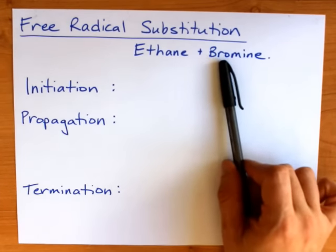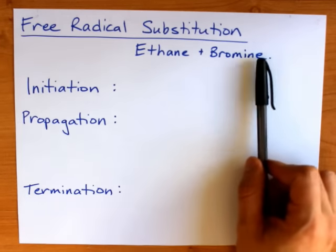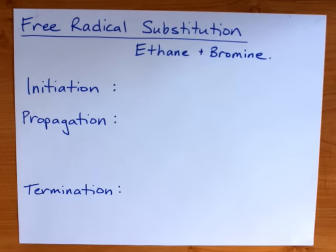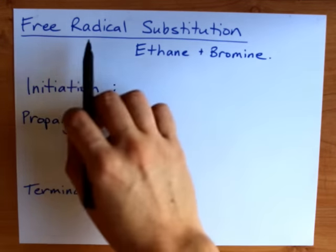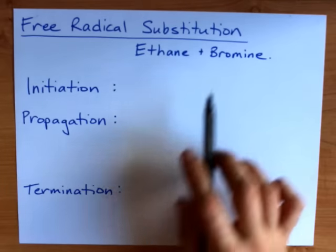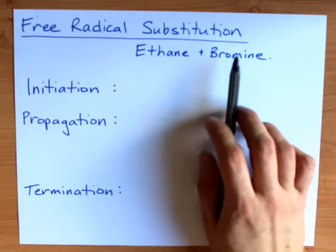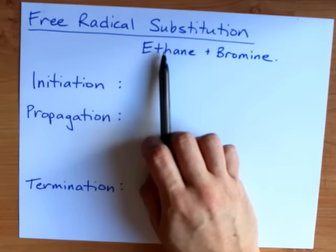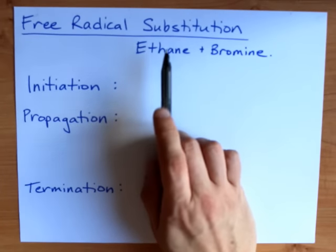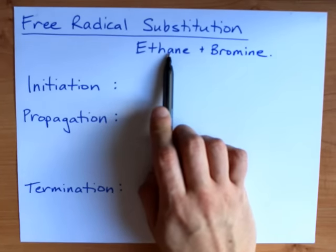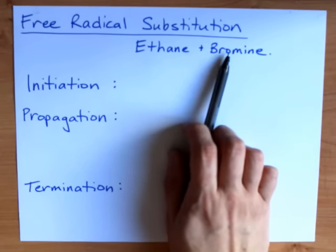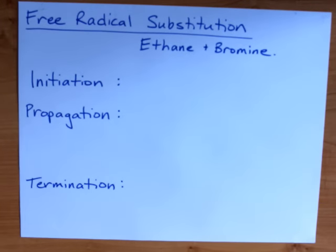It can be F2, Cl2, Br2, some teachers I imagine could ask you about I2, but I've never actually seen that in the real world. The reason that free radical substitution happens when you react an alkane with a halogen and not an addition reaction like an alkene does is because there's no double bond that can attack these halogen atoms. These halogen atoms need to be made reactive all on their own.